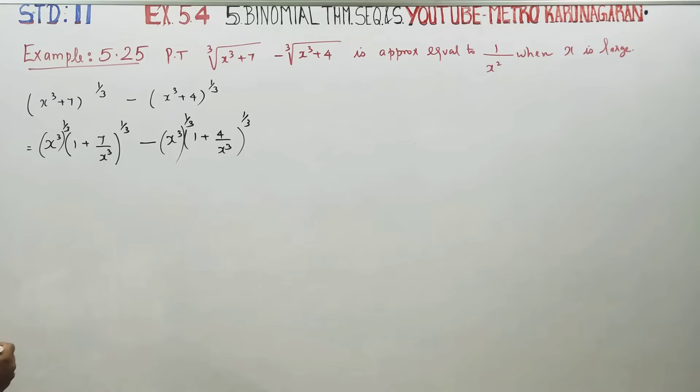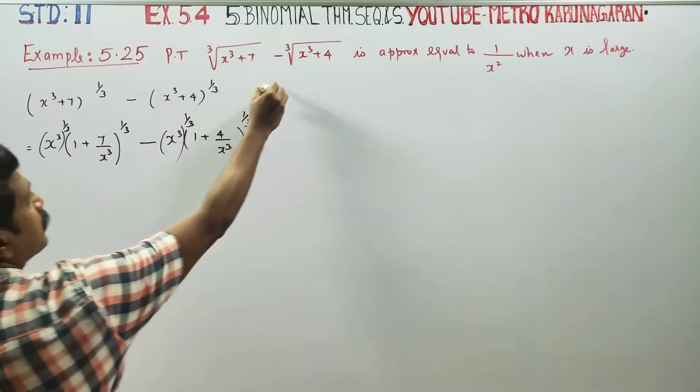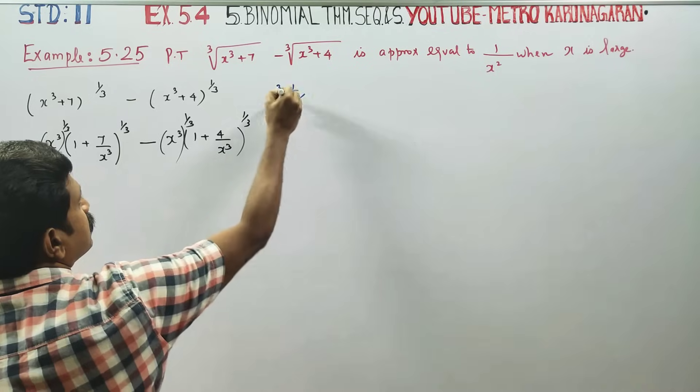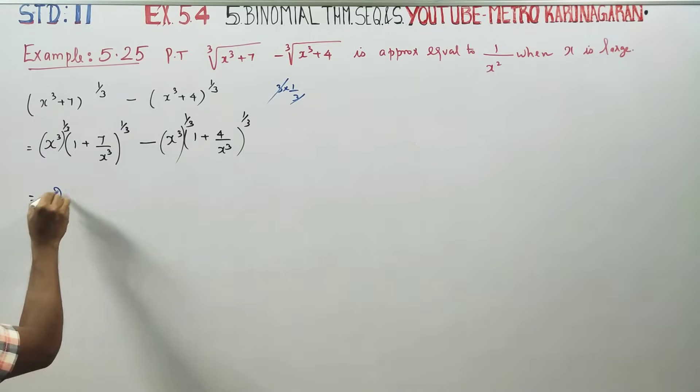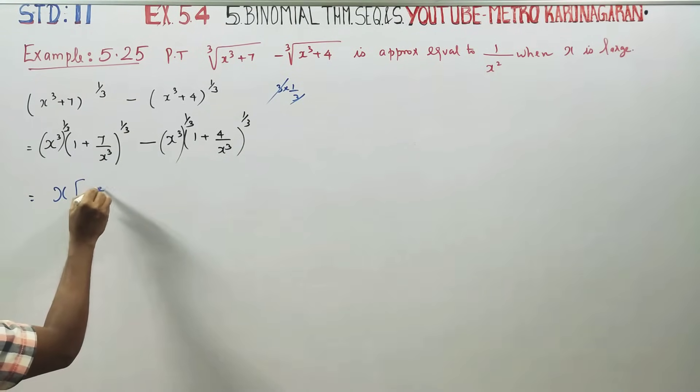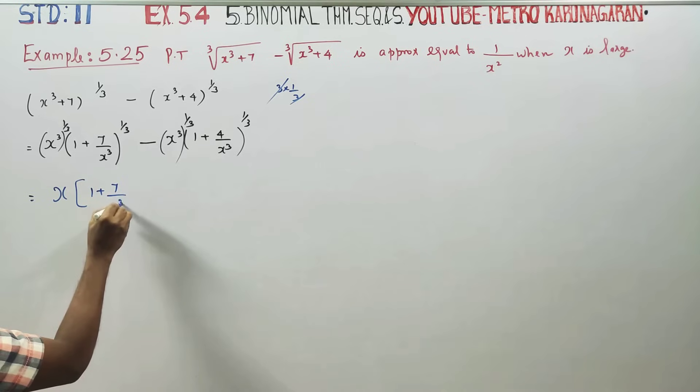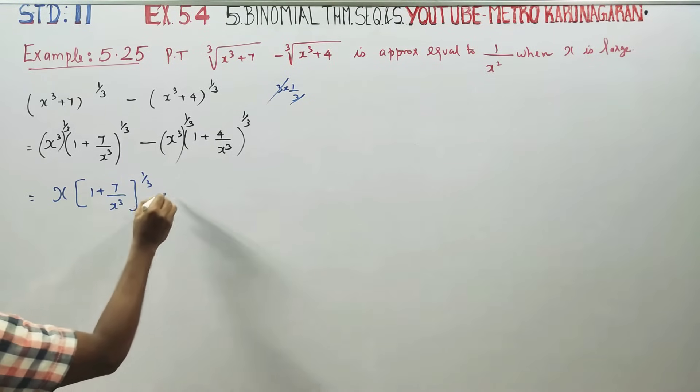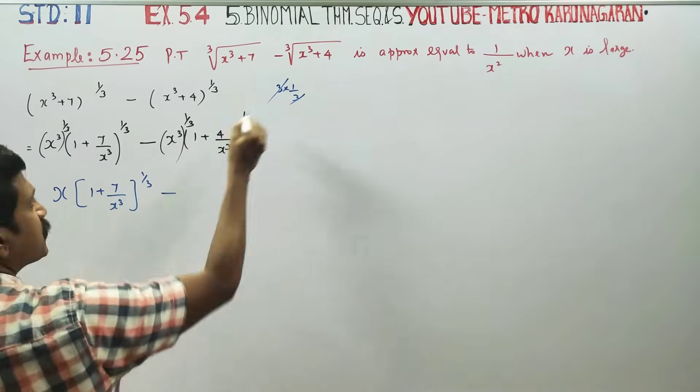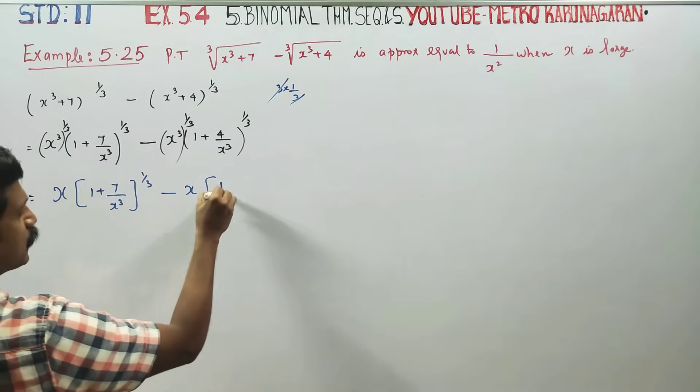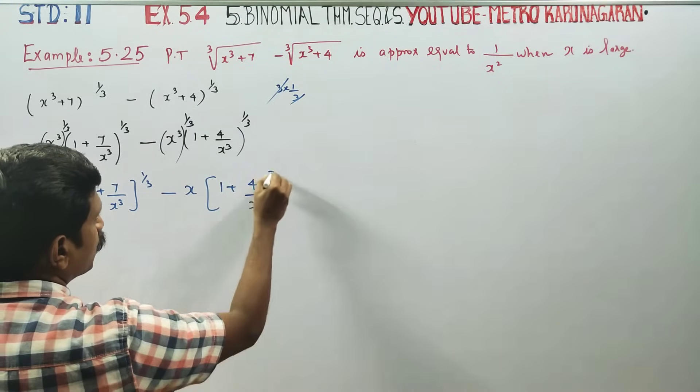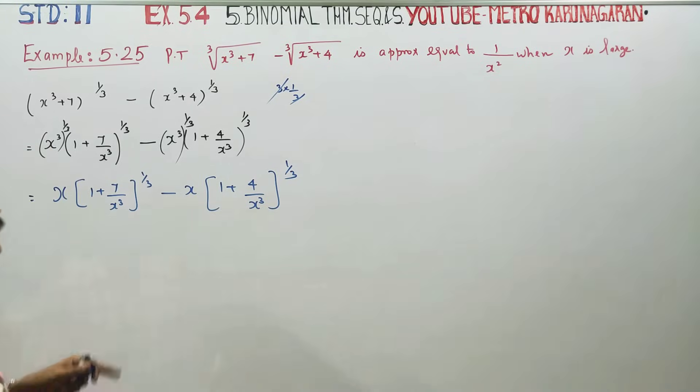The powers of 3 cancel out. You can see this as x times (1 + 7/x³)^(1/3). The power 3 and 1/3 cancel. This becomes x times (1 + 4/x³)^(1/3).